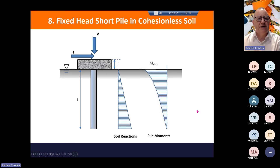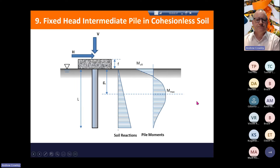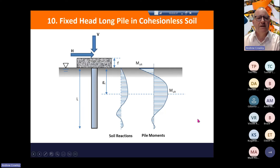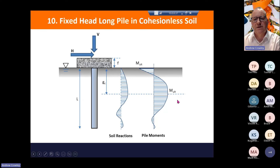For a fixedhead long pile in cohesive soil, we're again looking at double curvature bending with the moment distribution as shown. For a fixedhead pile in cohesionless soil, we have a linear soil distribution and parabolic moment distribution, with maximum moment at the top of the pile. For an intermediate length pile, the maximum shaft moment is down at a depth of Gc. And finally, for a fixedhead long pile in cohesionless soil, we have a very unusual-looking soil reaction and double curvature moment distribution down the shaft.